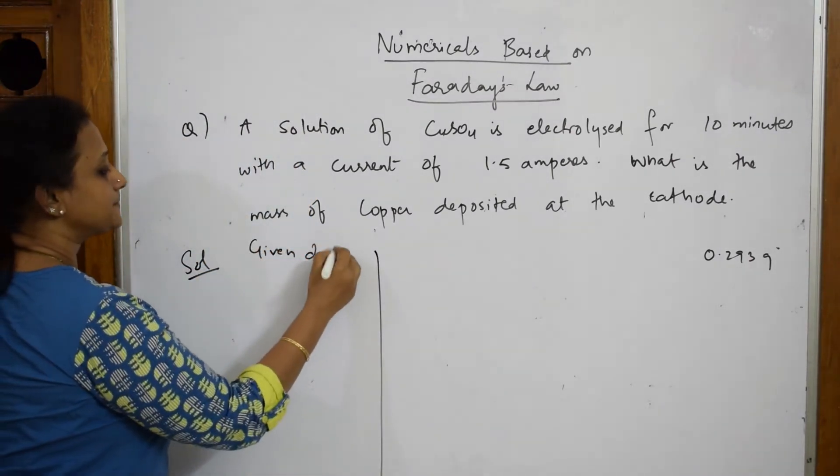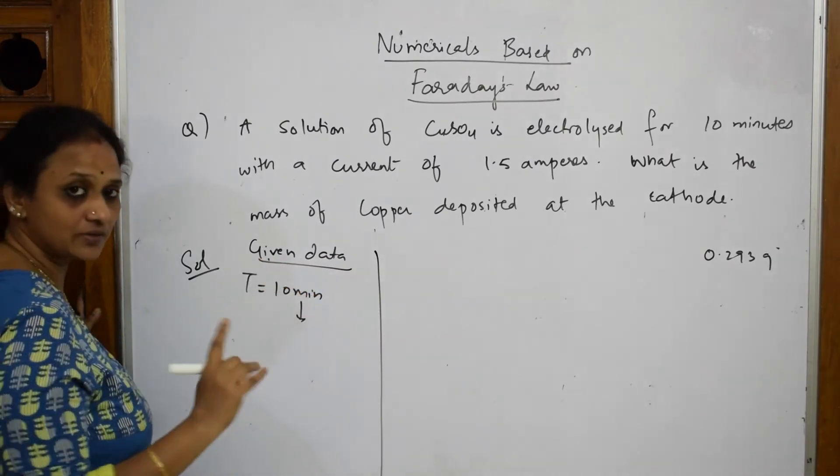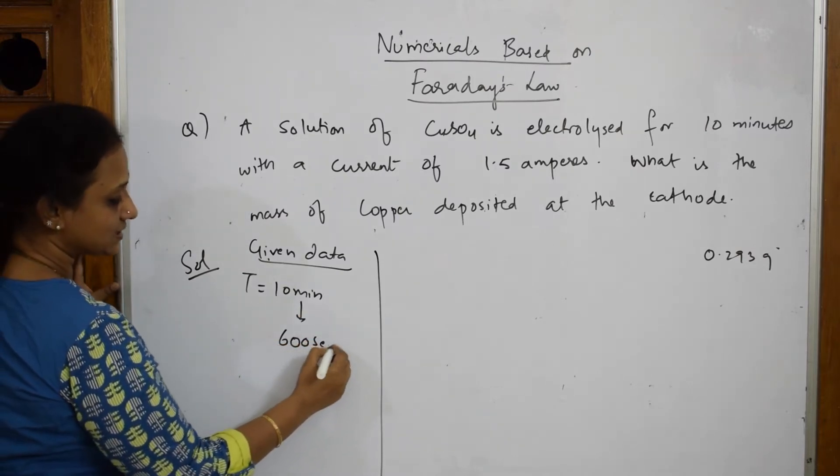Given that time is 10 minutes. Convert it into seconds always. Or do I have to convert? This is equal to 600 seconds, isn't it? Done.